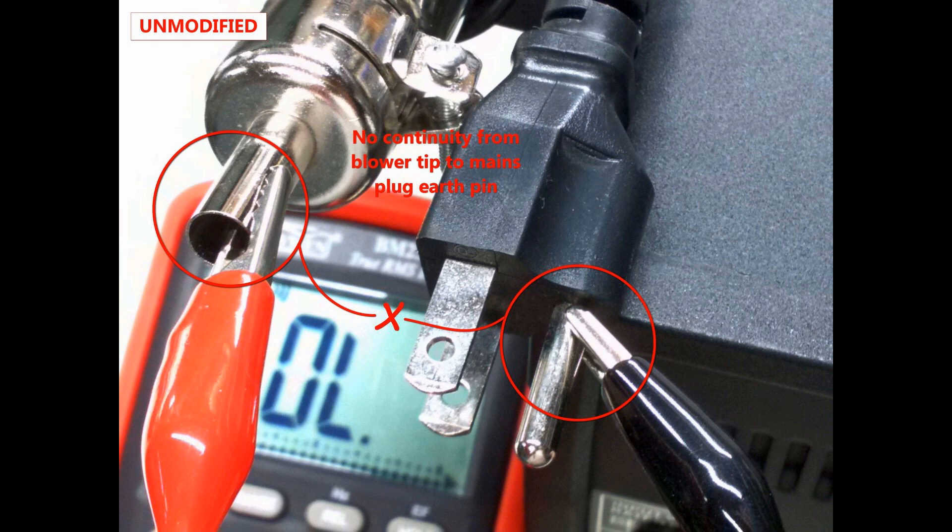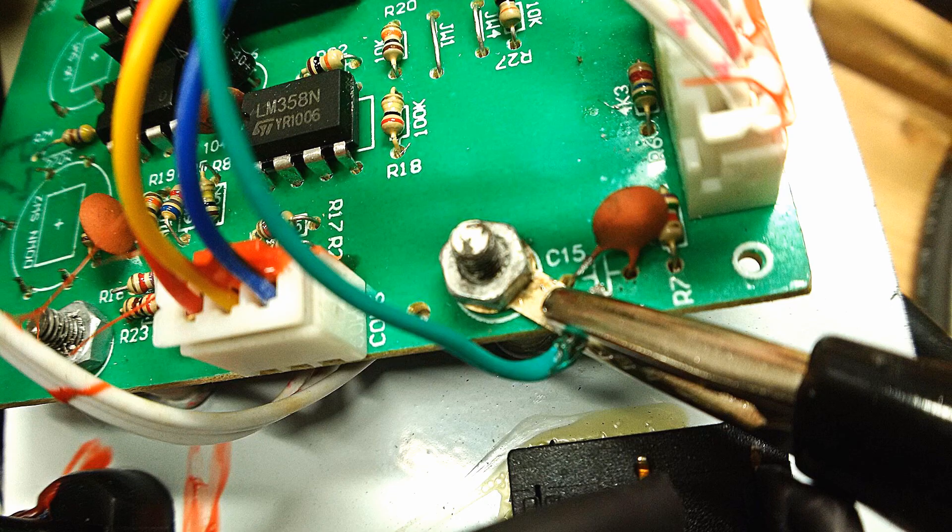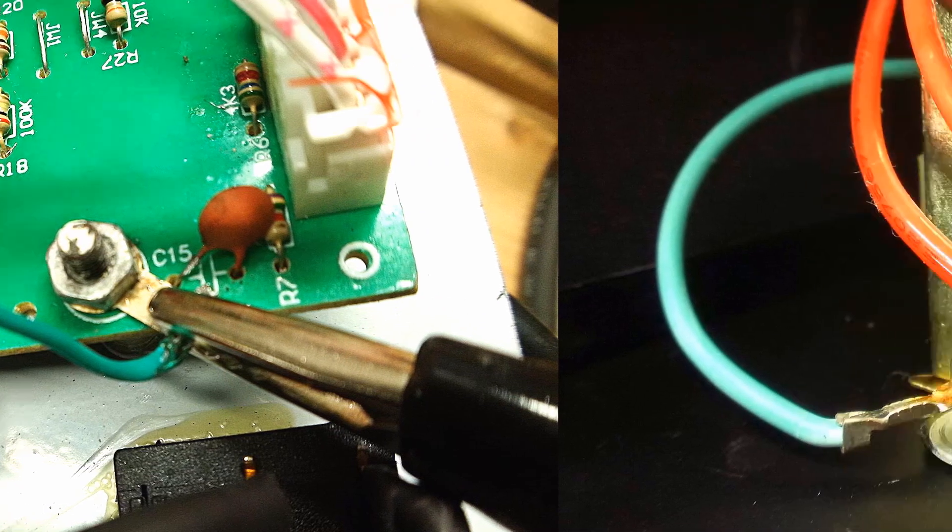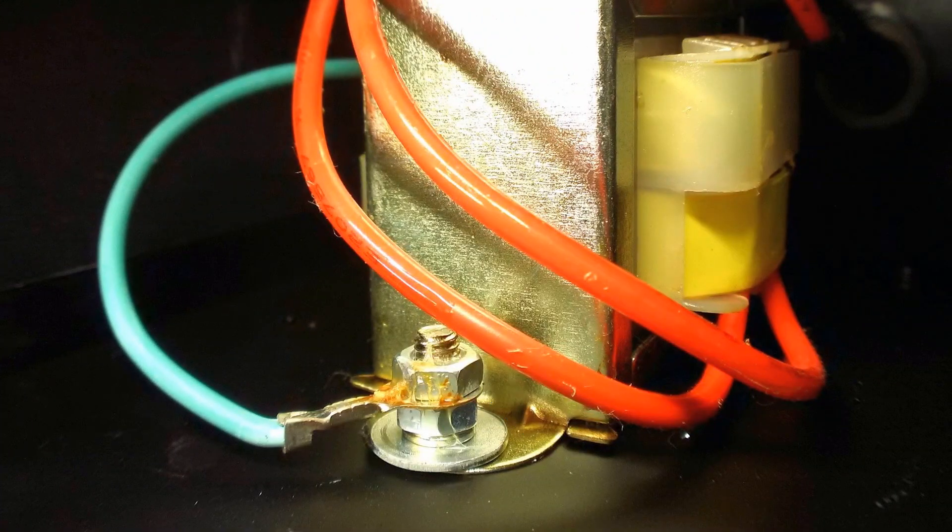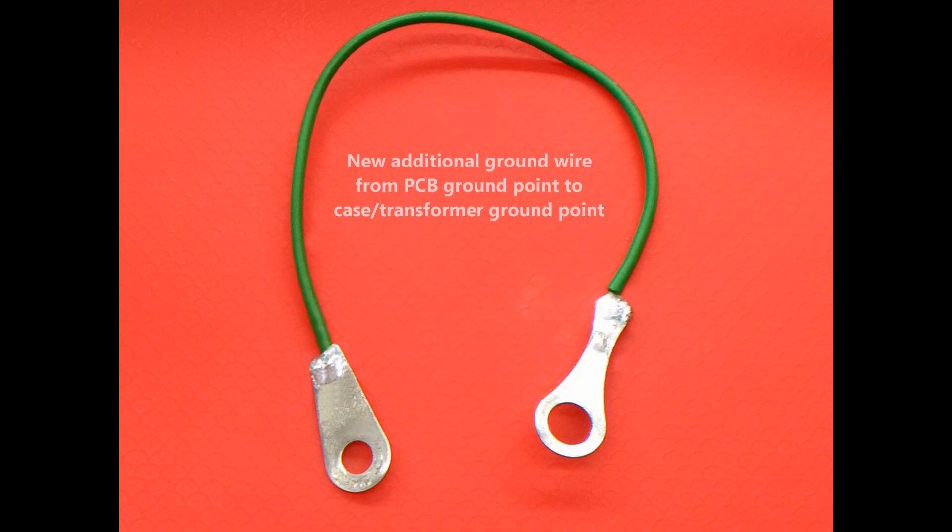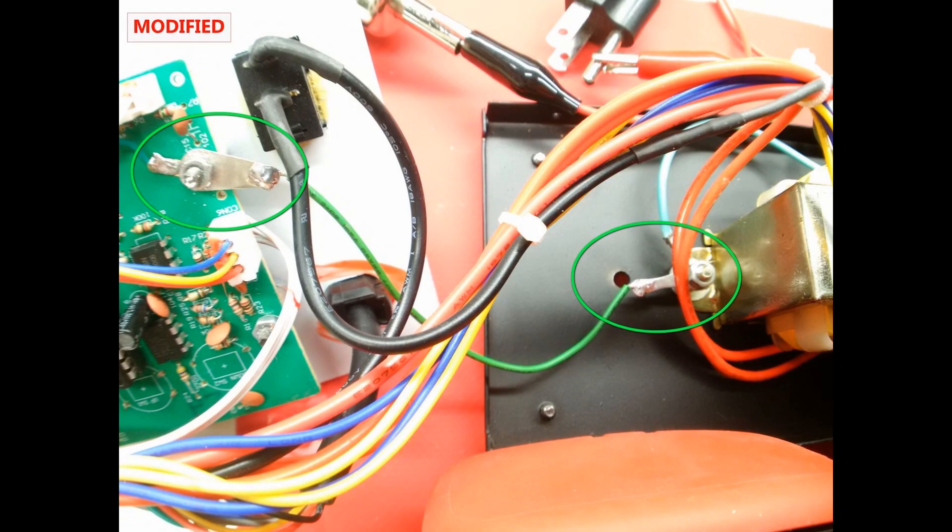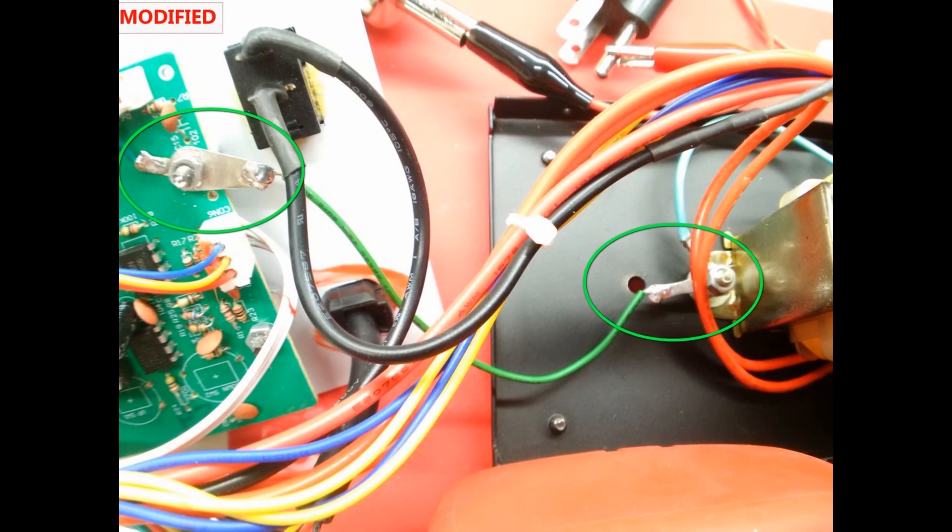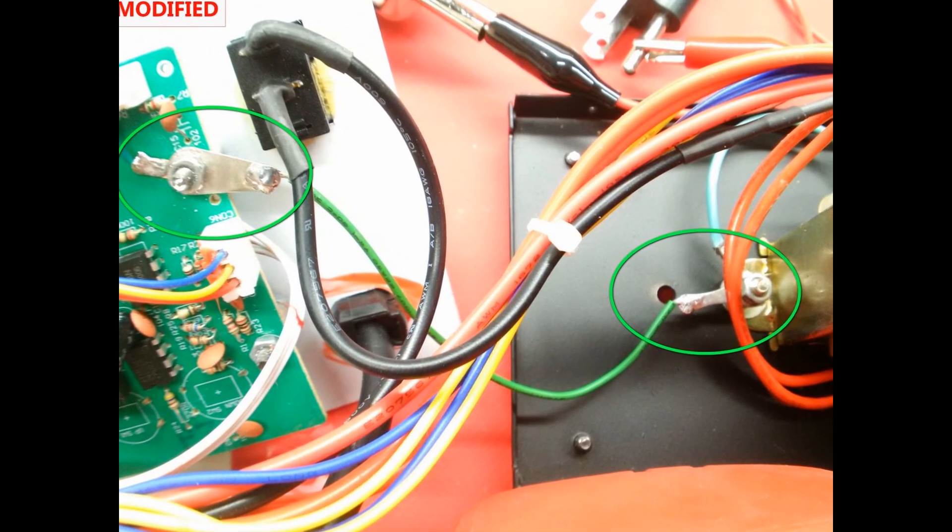So, following BWAC's advice, I completed the ground connection from where the blower handle ground wire terminates at the PCB over to where the mains power cable ground wire terminates at the transformer and chassis. And to do this, I made a simple add-on ground wire which will connect between those two points, completing the ground connection from tip to tail. And here it is installed, very simple, very effective, and we now have continuity.